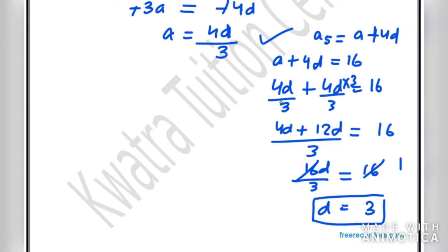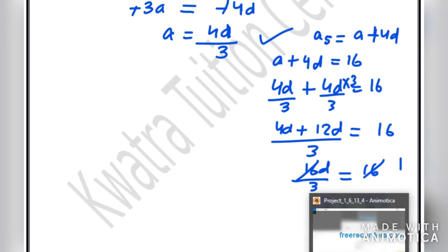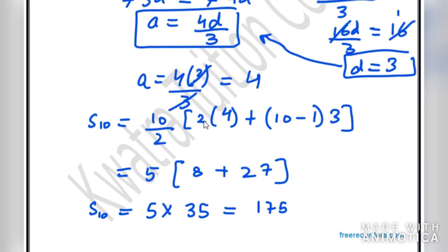Now finding S10: S10 = 10/2 × (2×4 + (10−1)×3) = 5 × (8 + 27) = 5 × 35 = 175. The sum of the first 10 terms is 175.